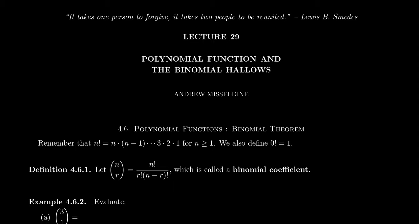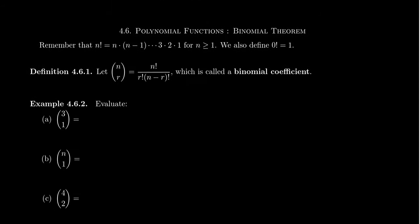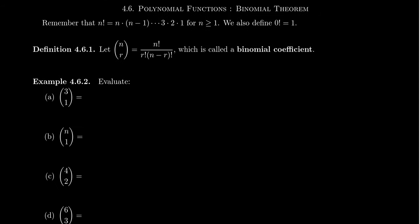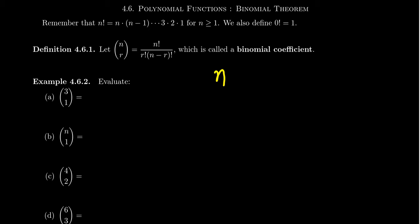So what do factorials have to do with our binomial theorem? We're now going to introduce the binomial coefficient. This is denoted as n over r — it's kind of like a fraction, but there's no fraction bar. We put parentheses around it; that's mandatory. This symbol is called the binomial coefficient, and it's defined to be n factorial divided by r factorial times n minus r factorial. Let's do a few examples.